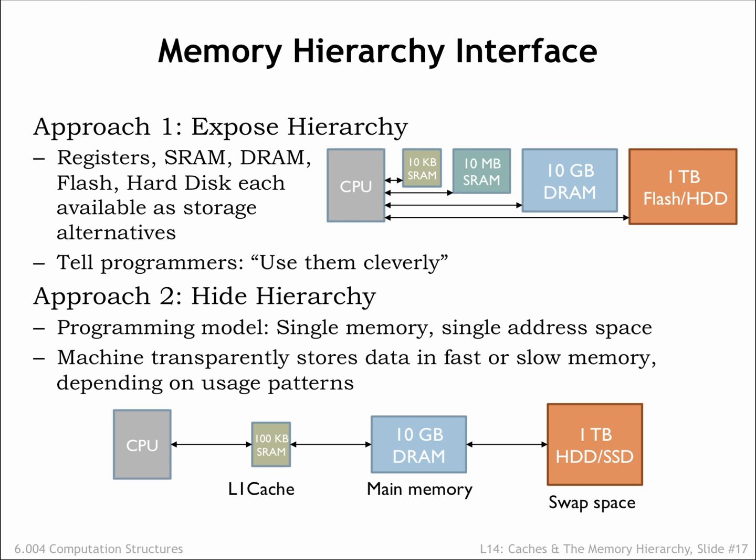The second alternative is to hide the hierarchy and simply tell the programmer they have a large, uniform address space to use as they wish. The memory system would, behind the scenes, move data between the various levels of the memory hierarchy depending on the usage patterns it detected. This would require circuitry to examine each memory access issued by the CPU to determine where in the hierarchy to find the requested location. If a particular region of addresses was frequently accessed — say when fetching instructions in a loop — the memory would arrange for those accesses to be mapped to the fastest memory component and automatically move the loop instructions there. All of this machinery would be transparent to the programmer.